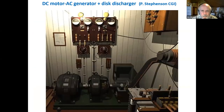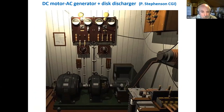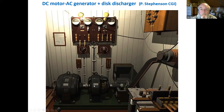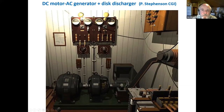This is a better look at the disk discharger on the right, the drive motor, and the alternator. The thing in the upper right corner is a series inductor with taps — you find the tap which gives you the most RF current and you've matched the antenna.